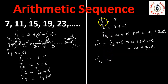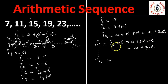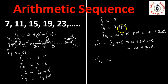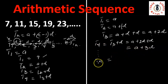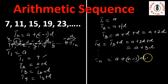Continuing this way up to tn: t1 equals a, t2 equals a plus 1d, t3 equals a plus 2d, t4 equals a plus 3d. Notice the pattern — when n is 2 the coefficient of d is 1, when n is 3 the coefficient is 2, when n is 4 the coefficient is 3. So for the nth term we can write tn equals a plus n minus 1 into d. That is how we derive the formula for arithmetic progression.